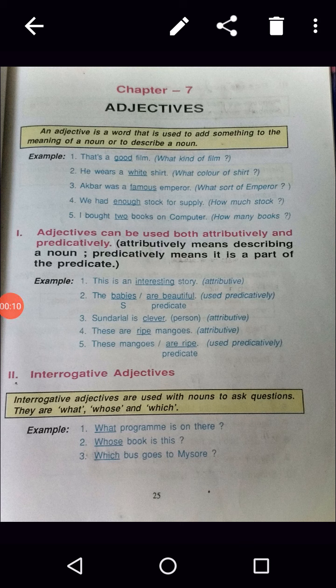What is an adjective? An adjective is a word that is used to add something to the meaning of a noun or to describe the noun. See the example: That is a good flame. It tells the kind of the flame — what kind of flame? The answer is good.